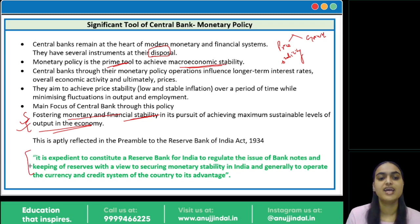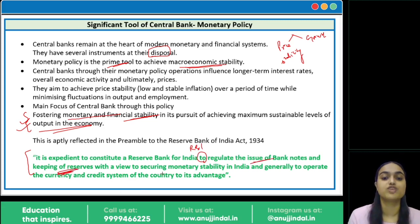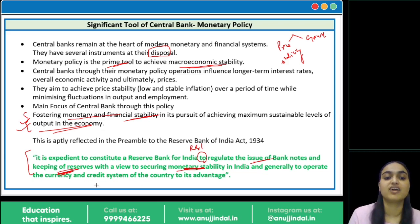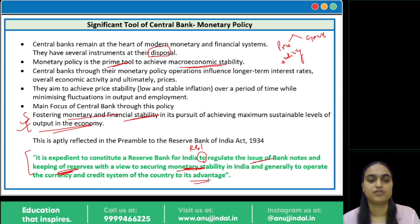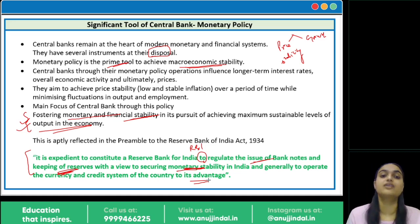The RBI preamble states it is expedient to constitute the Reserve Bank of India to regulate the issue of banknotes and keep reserves — with the objective of ensuring monetary stability. That is one direct function. Additionally, RBI has to operate the currency and credit system of the country to its advantage — maintaining how much currency to issue, how many notes to withdraw, and how much credit needs to be provided.